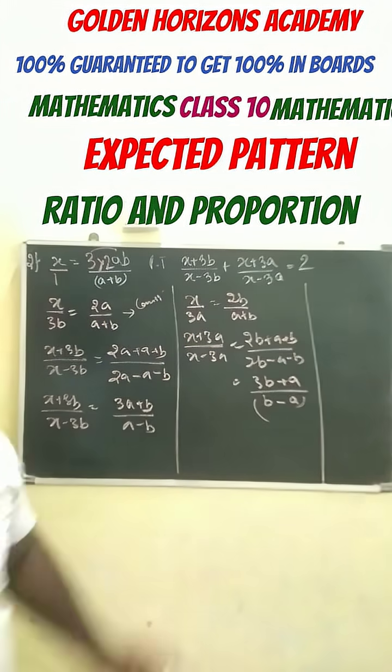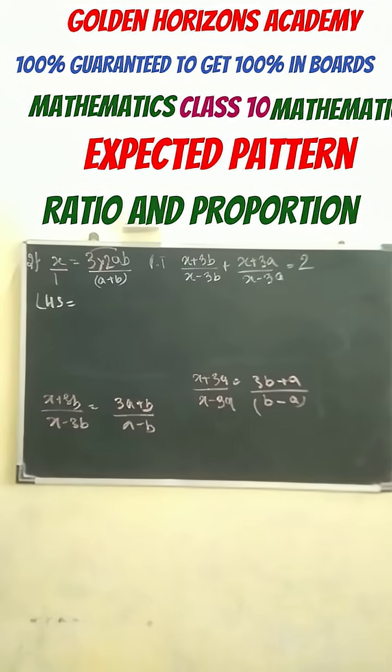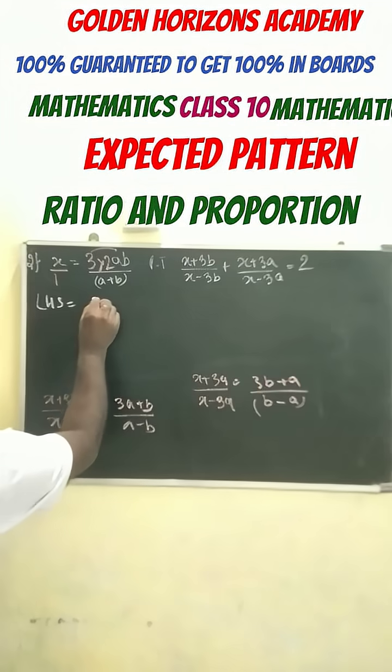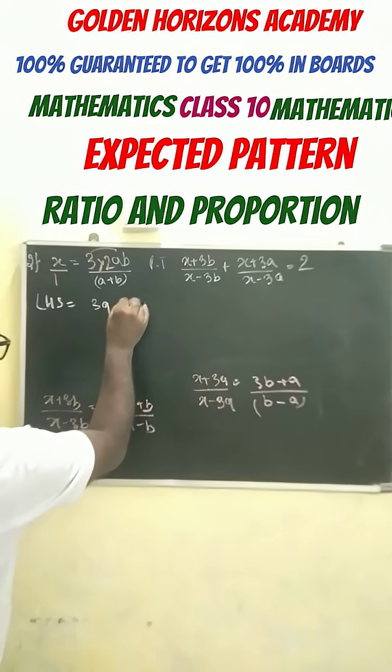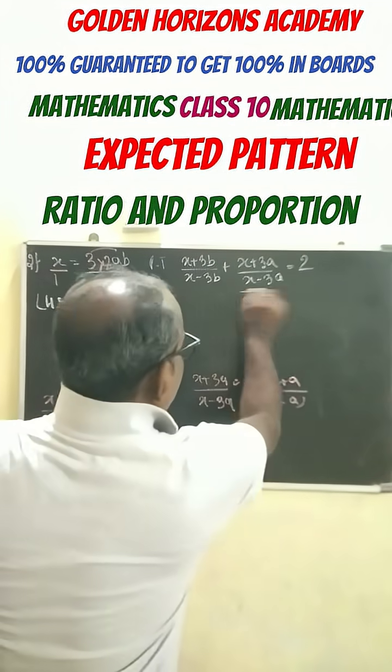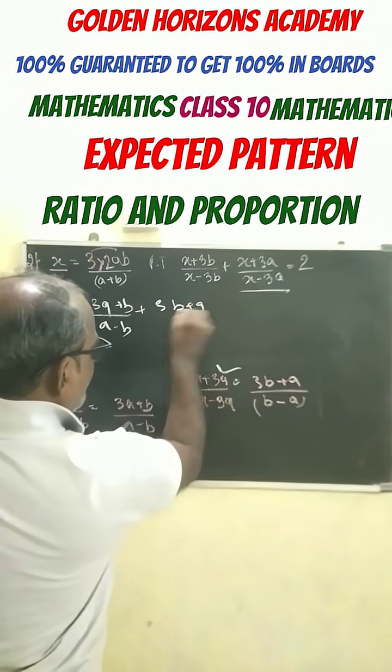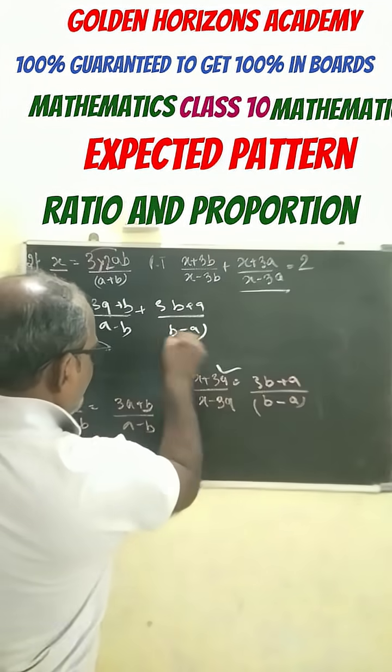Now we will use this. Now considering this LHS, this means you can write down here 3a plus b by a minus b, and this means you can write down here plus 3b plus a by b minus a.